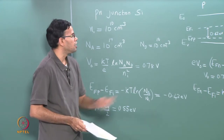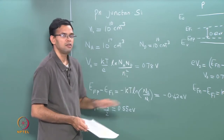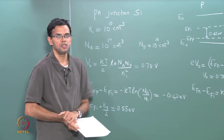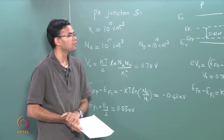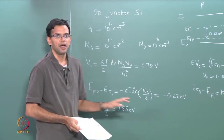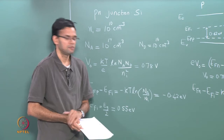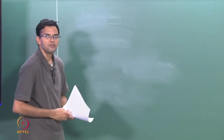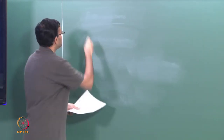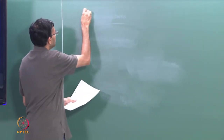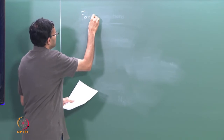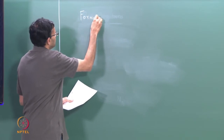Now this is all when we have a p-n junction in equilibrium. What happens when I bias my junction? The first thing we are going to look at is forward biasing the p-n junction.